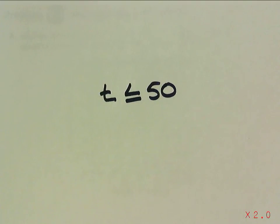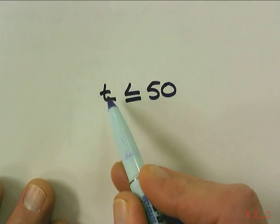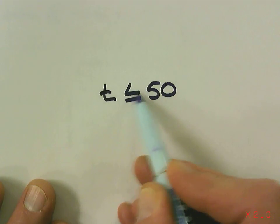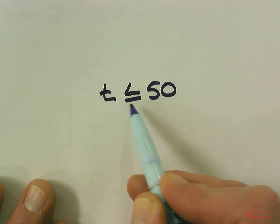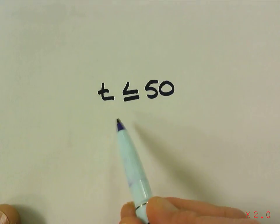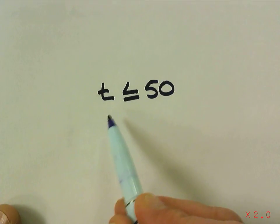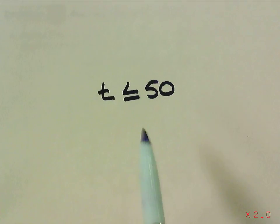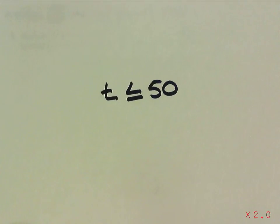So there's your inequality. That time t with the less-than-or-equal-to symbol: t ≤ 50 minutes. Time could be 49 minutes, 42 minutes, 10 minutes, or even 0 minutes — all of those are true values for less than or equal to 50 minutes.